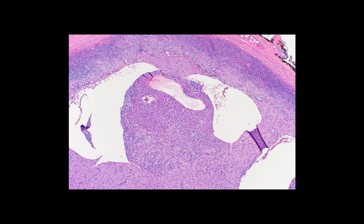In summary, angiomatoid fibrous histiocytoma is a tumor composed of three particular features: sheets of histiocytoid cells, central cystic often blood-filled spaces, and a peripheral lymphocytic cuff and dense fibrous pseudocapsule.